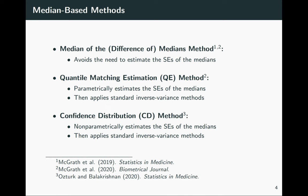The advantage of these mean-based methods is that they're applicable in very general meta-analytic settings. A few median-based methods have also been proposed, though they're more case-specific. The median of medians method — or, for two-group data, the median of the difference of medians — completely avoids having to estimate the standard error of the medians. There are also approaches that estimate the standard error of the medians and apply inverse variance weighted methods, including quantile matching estimation (QE), which uses a parametric estimator, and a subsequent non-parametric estimator.